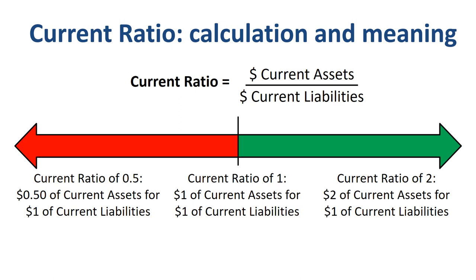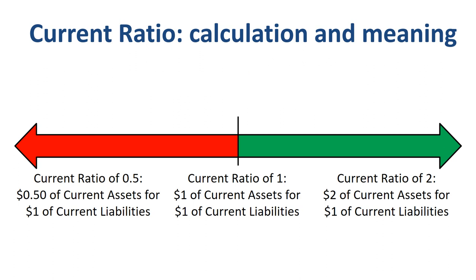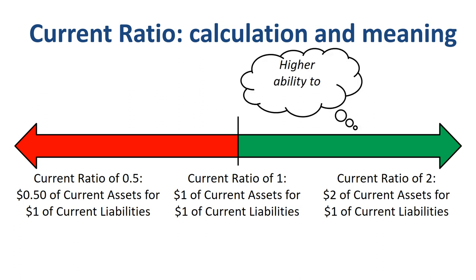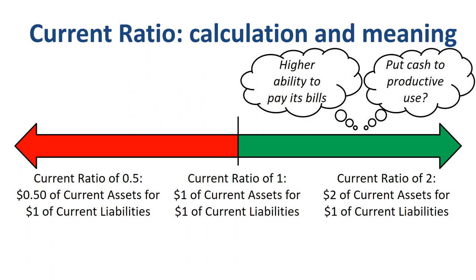The current ratio is a measure of short-term liquidity — can the company pay its bills? Most people, including suppliers and shareholders, would say a current ratio of 1 or higher is good. However, is a current ratio of 2, 3, or 4 necessarily a good thing? The ability to pay bills would be very high, but a very high current ratio could also signal the company is not putting its cash to productive use — perhaps they should invest in new equipment, more R&D, do an acquisition, or pay a dividend.